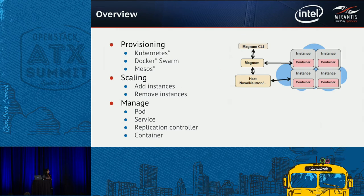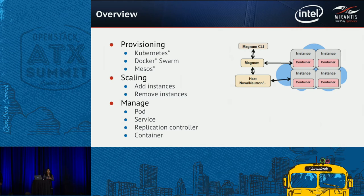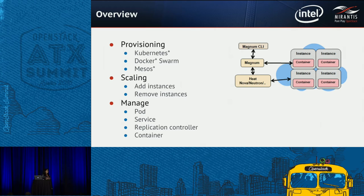We support three kinds of COEs: Kubernetes, Swarm, and Mesos. We support scaling of nodes — when you want to scale up by two or three nodes, you specify a Bay update with the node count, and Magnum talks to HEAT which scales up or down for you. We manage pods, services, replication controllers, and containers through API — you can create, delete, or update a pod. We mostly encourage people to use native CLIs for container lifecycle management since it's extensive and can't all be managed within Magnum.